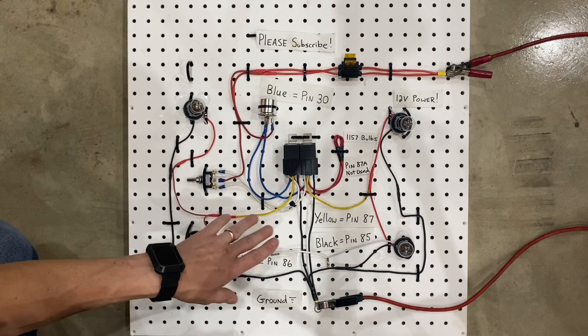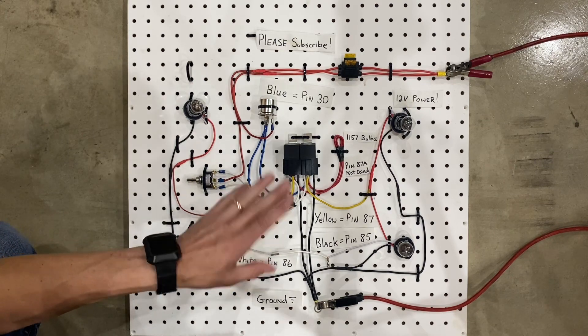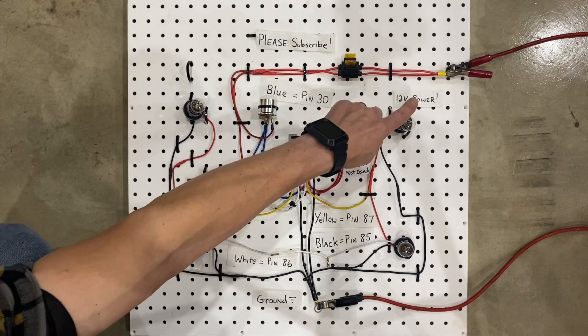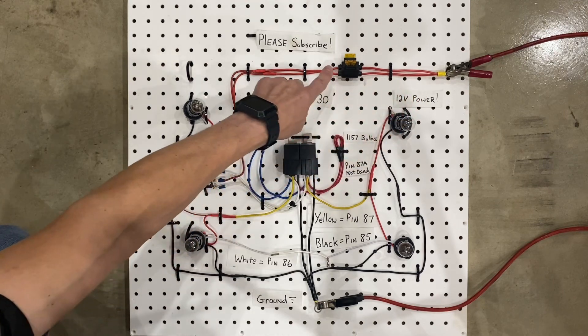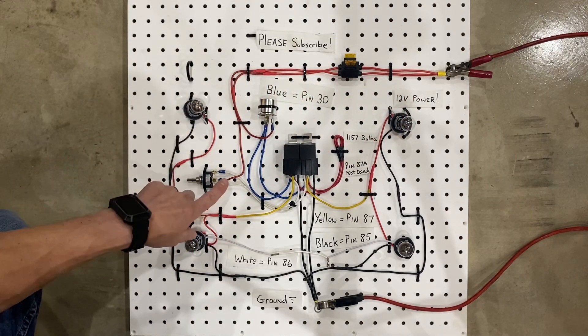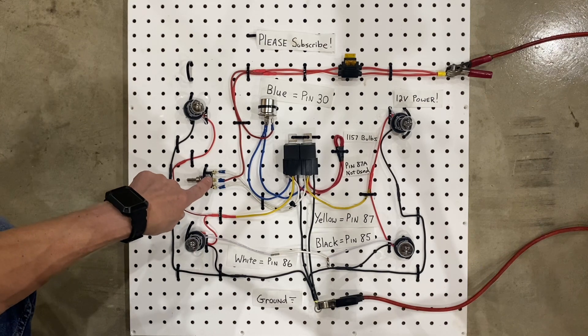The other pins that I haven't mentioned yet are pin 86, which begins at the battery. So, you have power coming in through a fused wire, and the power goes to the center of a three-way switch.